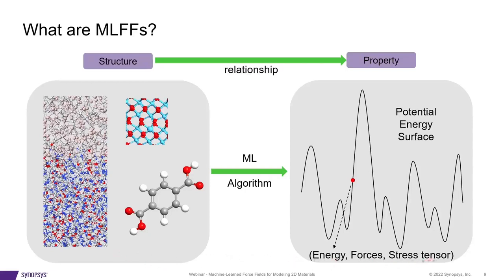These DFT data points correspond to a particular point on the potential energy surface. Once we provide enough data points, the machine-learning algorithm interpolates between them using algorithms such as linear regression, non-linear regression, or neural networks — it's up to the choice of the user.